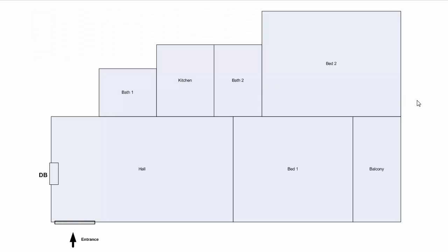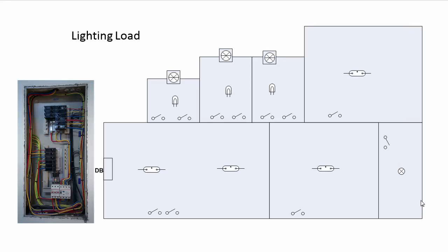This is the plan of my two-bedroom flat. The entrance is here, and we have a hall, dining hall, two bathrooms, one kitchen, two bedrooms and a balcony. The distribution board is kept here. Now we will go into more detail about how the different circuits are wired.